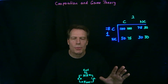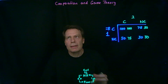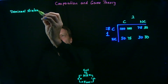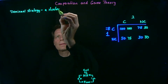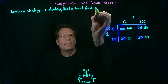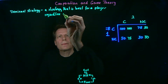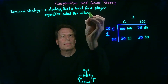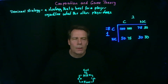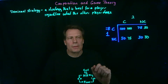In other words, regardless of what the other player is doing, it is in your best interest to cooperate. That's what we call a dominant strategy in game theory — a dominant strategy is a strategy that is best for a player regardless of what the other player does. So in this case, Player 1 has a dominant strategy to cooperate because regardless of what Player 2 does, it's in his best interest to cooperate.